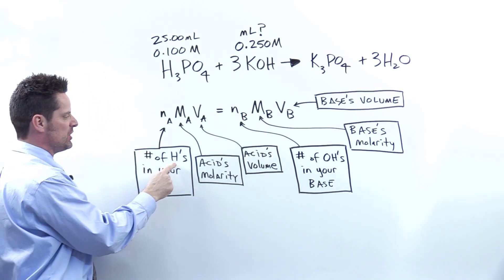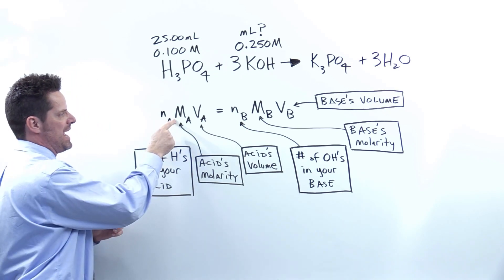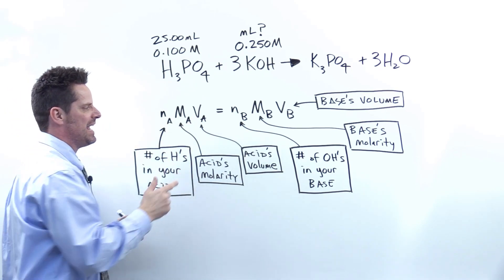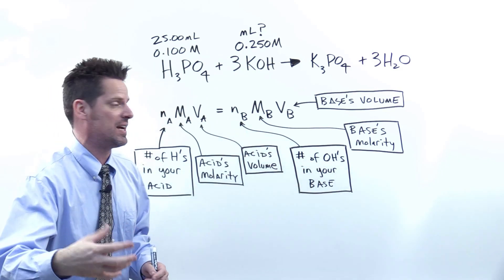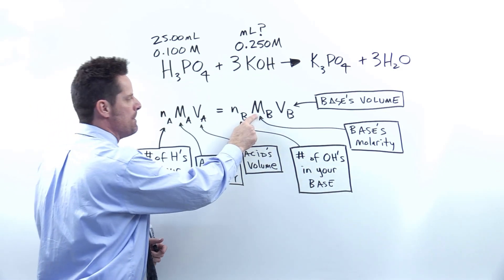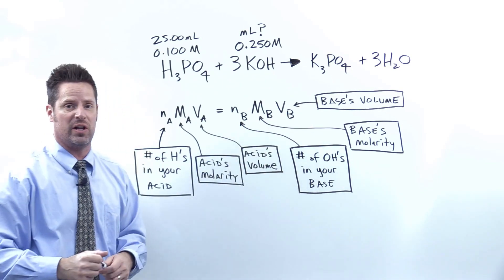where Na is the number of H's in your acid's formula, Ma is the acid's molarity, and Va is the acid's volume. Nb is the number of OH's or hydroxides in your base's formula, Mb is the base's molarity, and Vb is the base's volume.